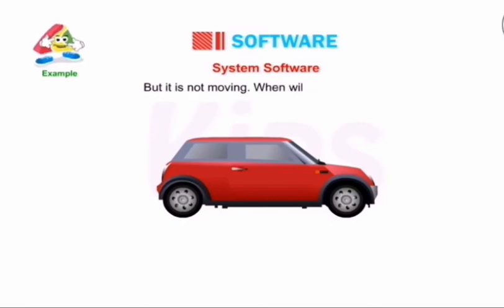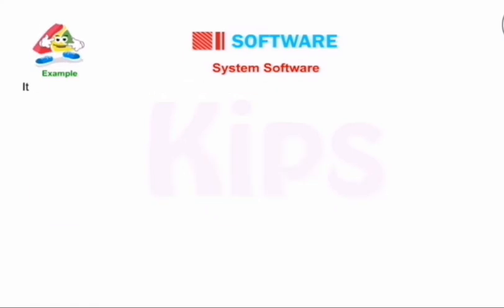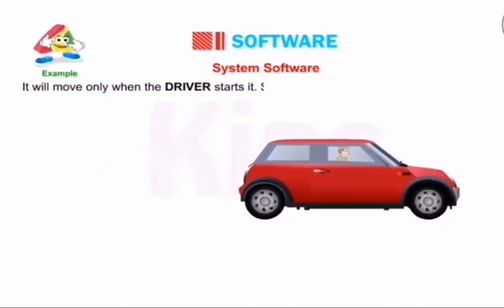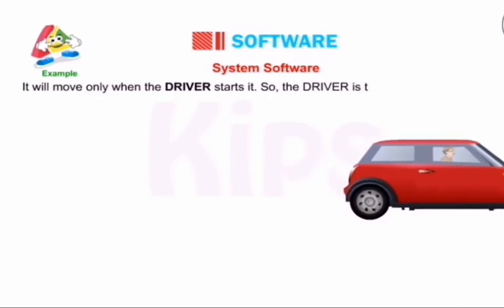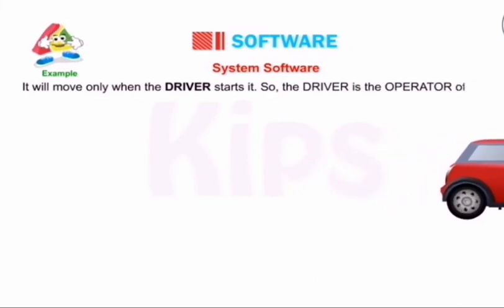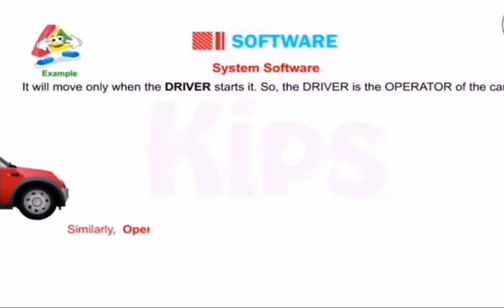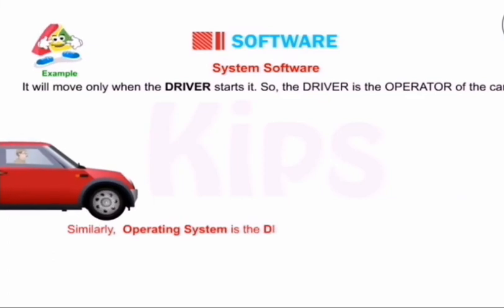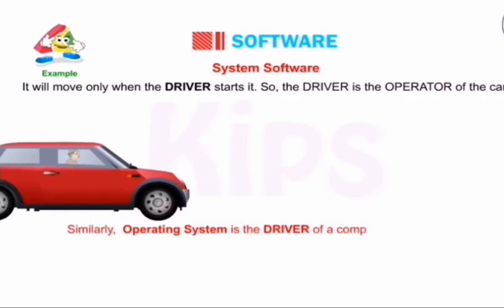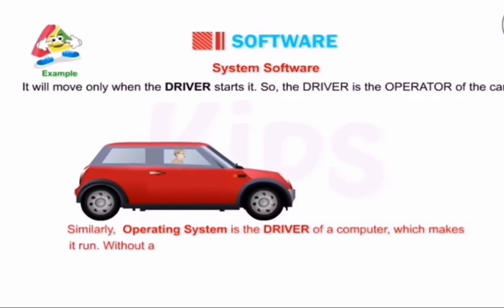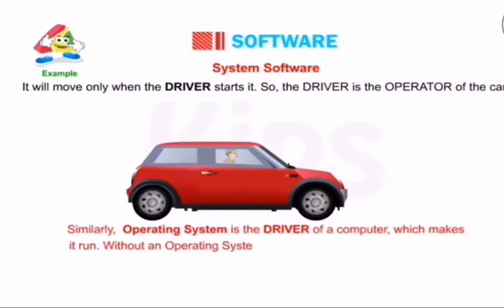Why is it not moving? The car only moves when the driver starts it. The driver is the operator of the car. Similarly, the same role that a driver plays for a car, the operating system plays for a computer. The operating system is the driver of a computer — it makes it run. Without an operating system, a computer cannot work on its own.